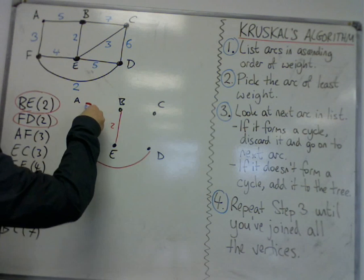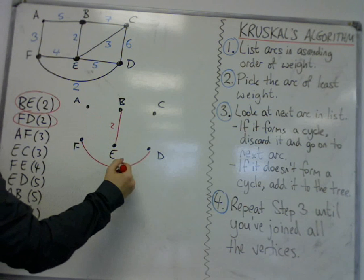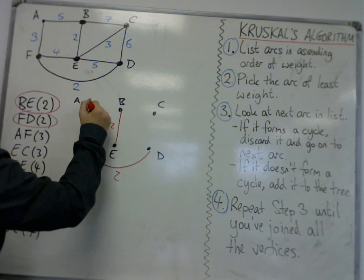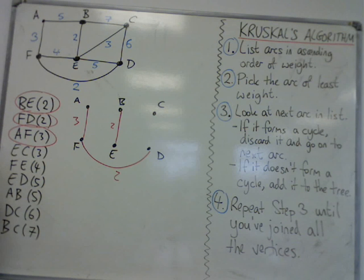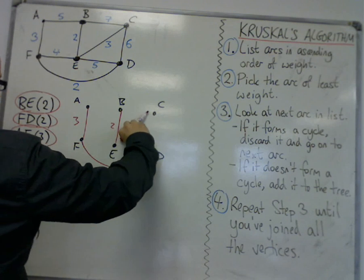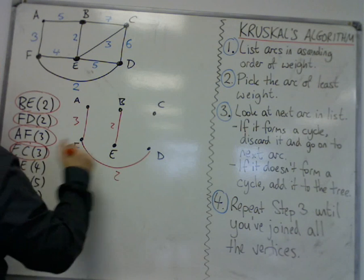A, F. Okay, that won't make a cycle either. That was of weight 2, that one. So that's of weight 3. So I select that one. Then I've got E, C. E, C won't create a cycle either.